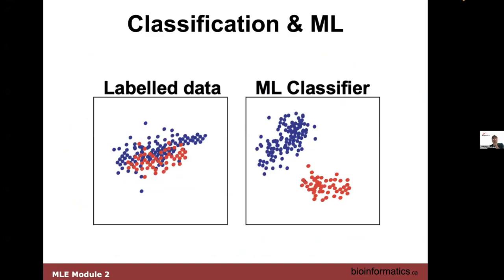We've seen this image before — we'll have labeled data, one labeled red, one labeled blue. We run our classifier and it separates them. That can be done through partial least squares, discriminant analysis, partial component analysis, the support vector machine, or the decision tree. Any one of those are classifiers that allow us to pull or separate things based on certain features.